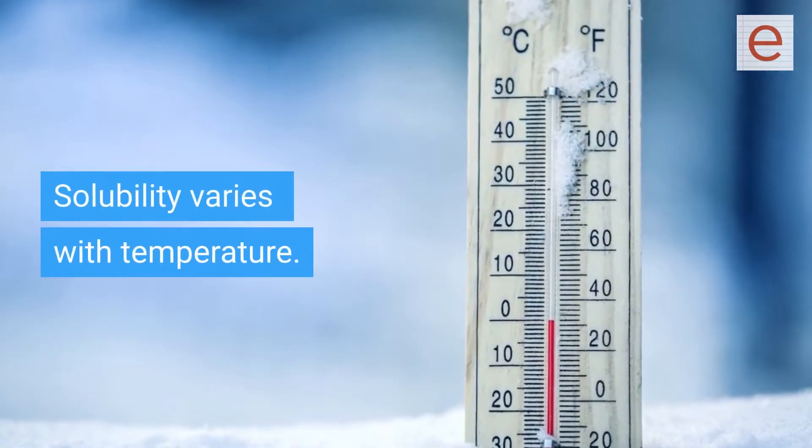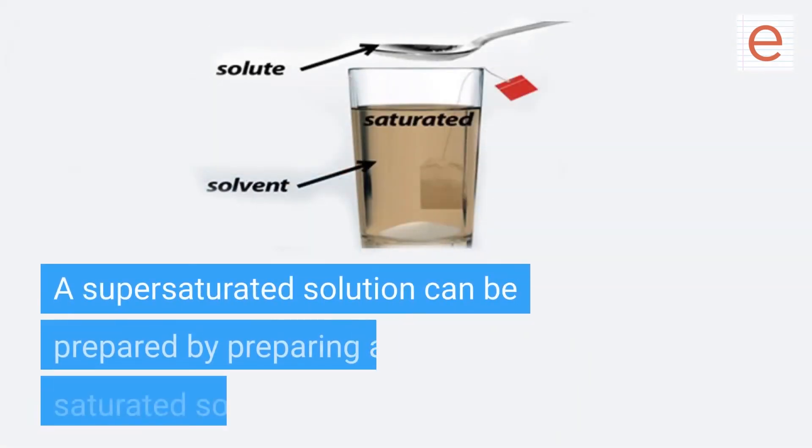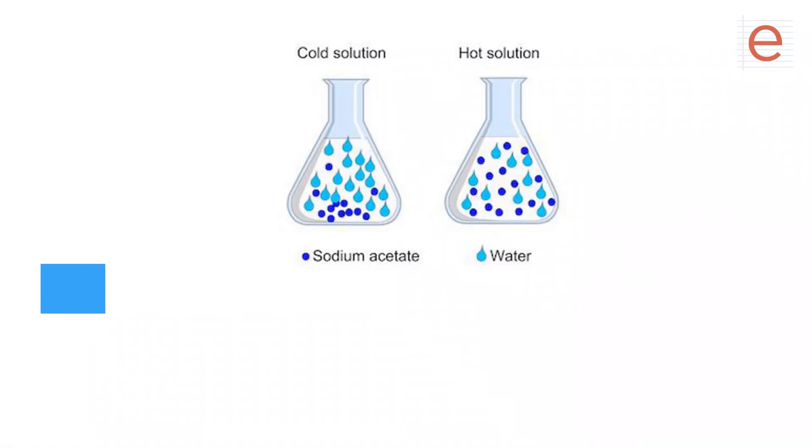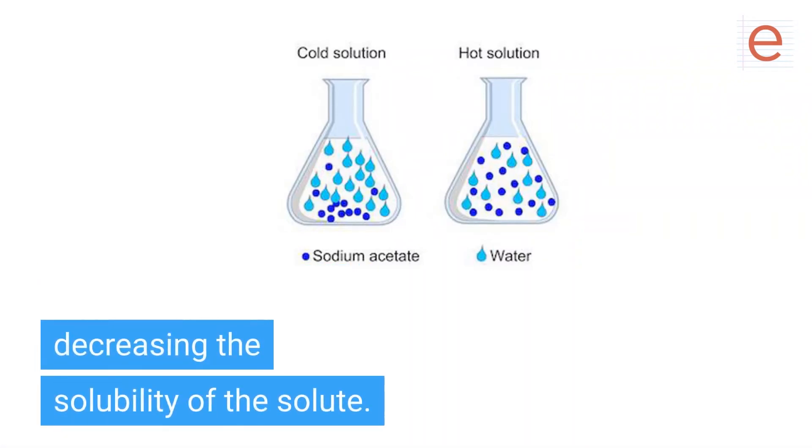Solubility varies with temperature. Most substances are more soluble at higher temperatures. A supersaturated solution can be prepared by preparing a saturated solution at a higher than desired temperature, then allowing it to cool, decreasing the solubility of the solute.